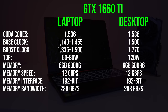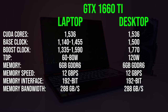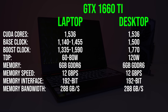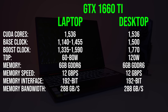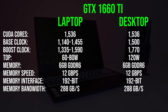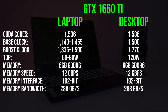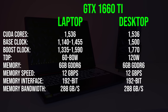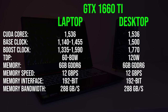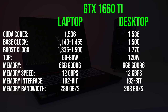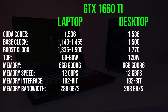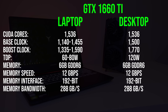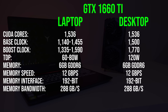Let's start by looking at the differences in specs between the desktop and laptop 1660 Ti. For the most part they share a lot of similarities — they've got the same amount of CUDA cores, memory, and memory speed. The key difference is the power limit. The desktop option has a higher 120 watt TDP, so it's able to reach higher clock speeds and perform better. The laptop version has a lower power limit because it needs to run cooler, as laptops typically have more thermal restrictions.